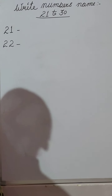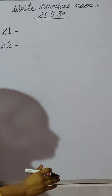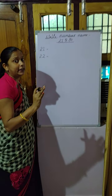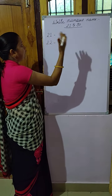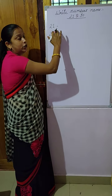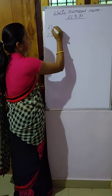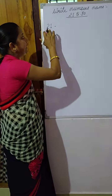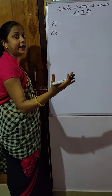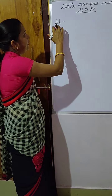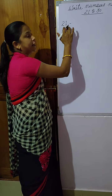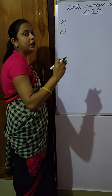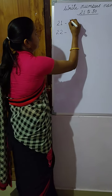Children, I think you have learnt the spelling of 20. Now, what we have to write? The spelling of 21. First we write the spelling of 20. We will write which spelling? 20. How do we write it? For 21, so we have to write the spelling of 20 first. What is the spelling of 20?